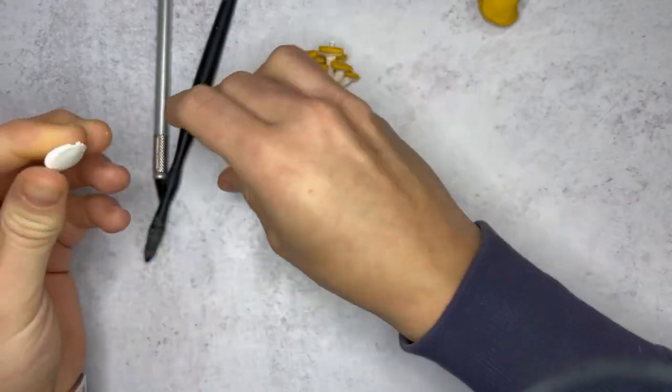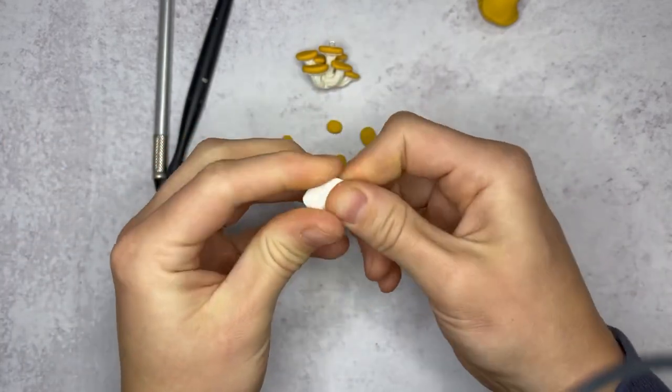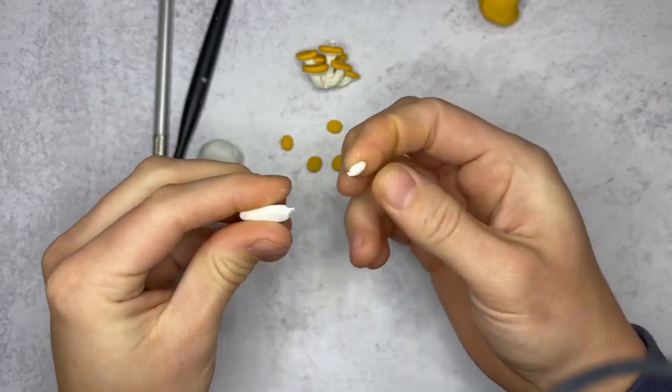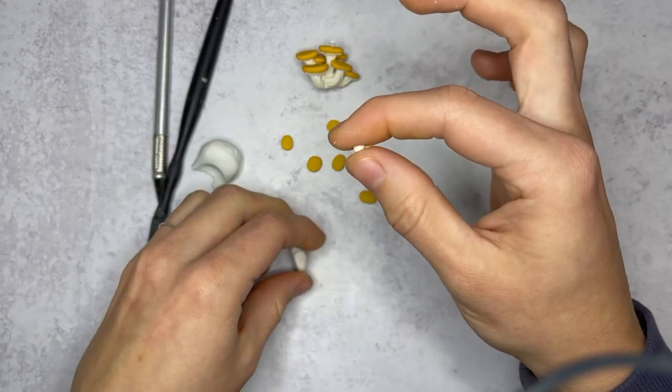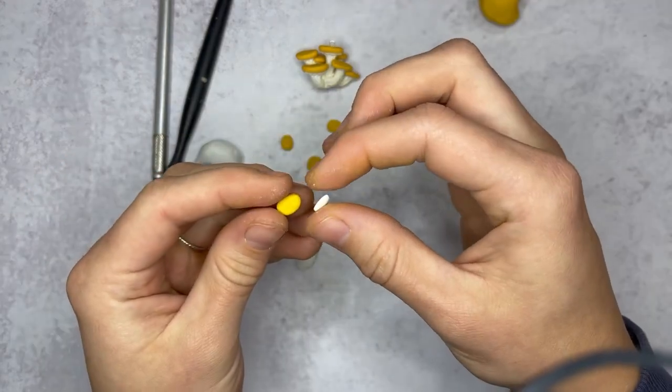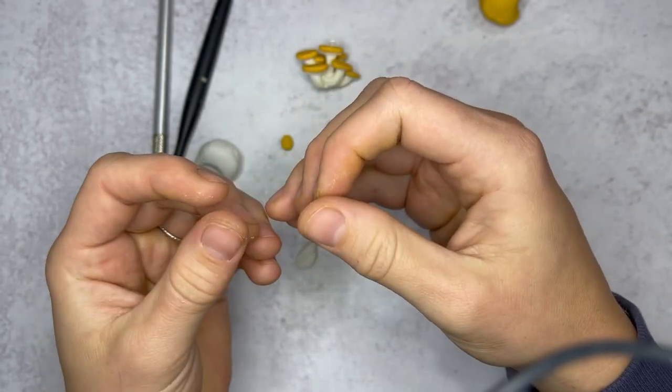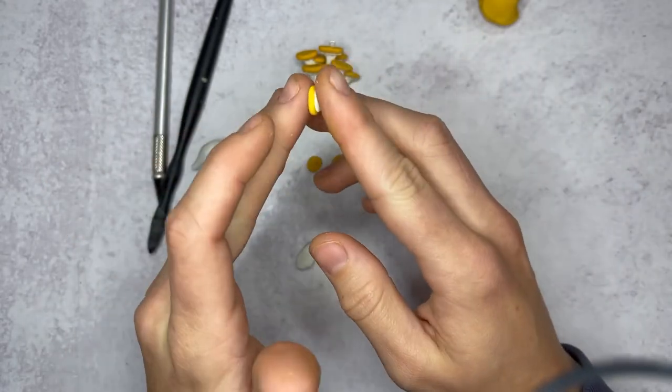Take your white clay. And it's okay if you get some yellow on your white clay, because it makes it look a little more natural. But warm it up between your fingers, and then you're going to take as many pieces of clay off as you've made the tops of your yellow. Roll them into a ball, and then you're just going to flatten them into an oval, set them on top of your yellow portion, and tap it together. Do this for all of your toadstool tops.